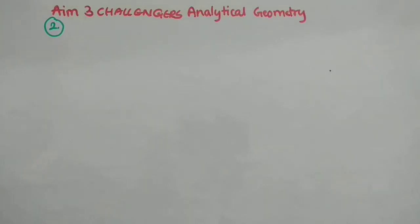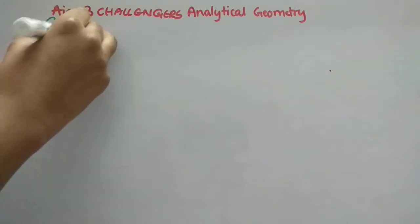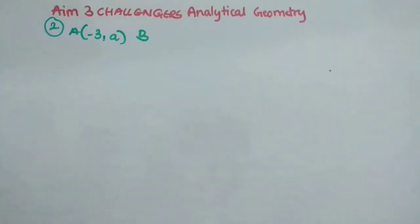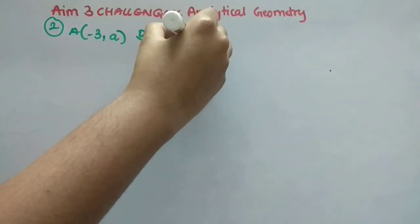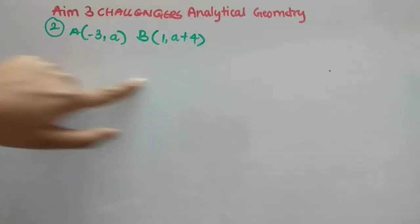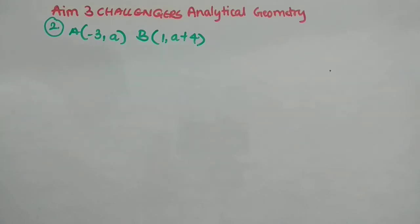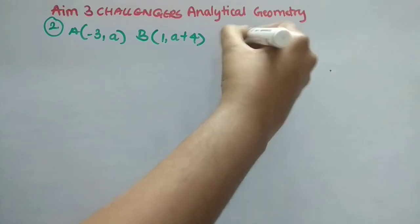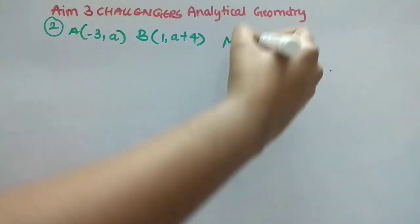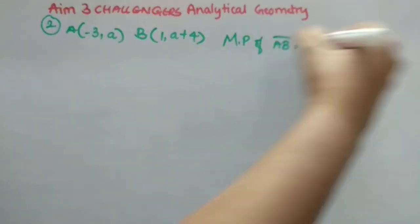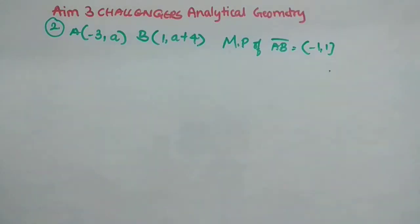Second question we have to see. First one was done with explanation of the summary in the first video. So let's start. The question says, if the coordinates of A and B are, what are the coordinates? So I will write on the board, minus 3 comma A and B coordinate is 1 comma A plus 4.